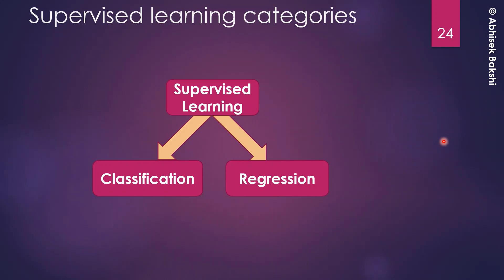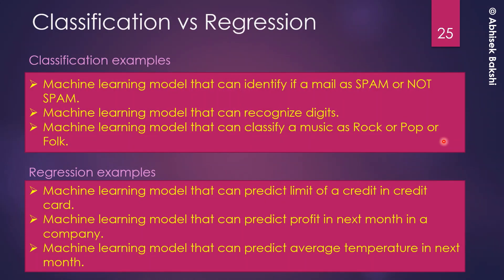There are two different types of supervised learning problems: one we call classification and another we call regression. Let's go through some examples of each, and hopefully you will be able to understand the difference by yourself.